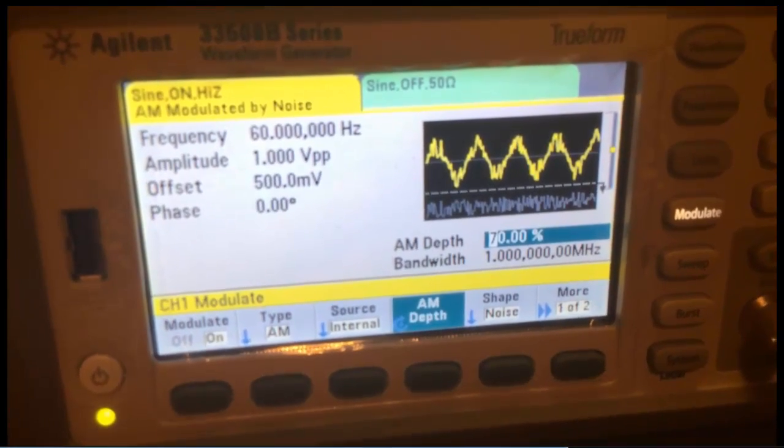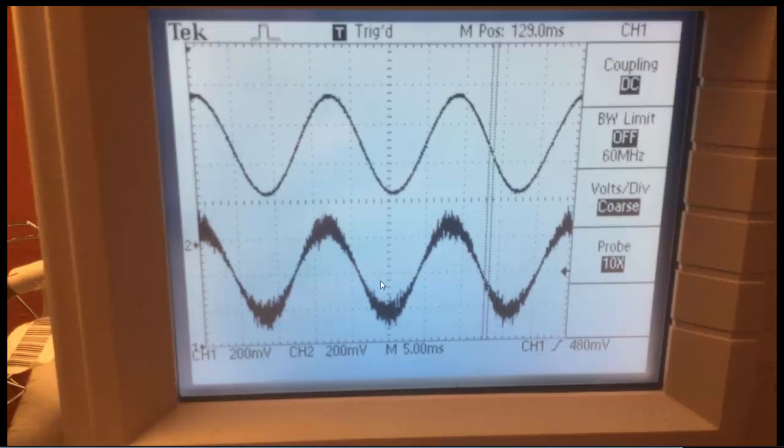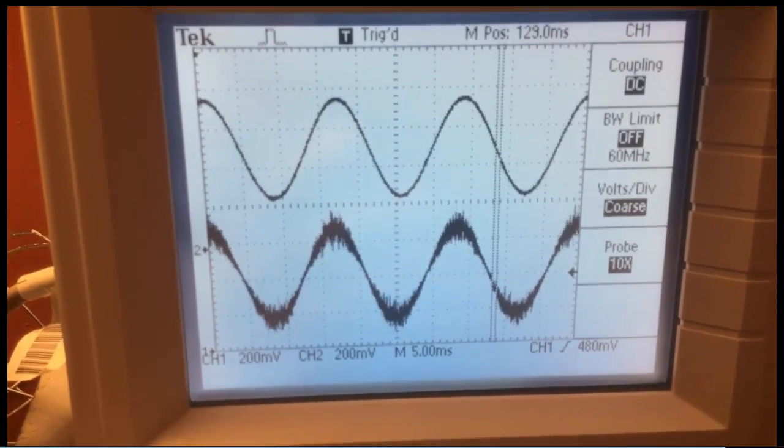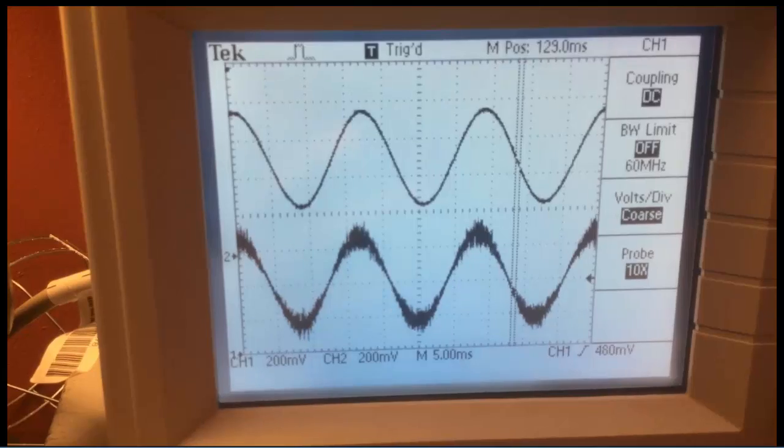Now we're going to look at the oscilloscope to show the input and output signal. On the bottom here is our input signal and we can see the noise on it, right? We can see that noise that the function generator added. On top, that's our output signal. We can see we get a nice clean output. Remember, 60 hertz, and we have a lot of noise on this, so we're actually attenuating the noise pretty well. We're not going to have this much noise in real life, but this is just for an example purpose. You can kind of see the noise moving around.